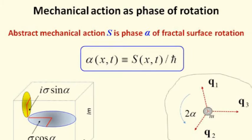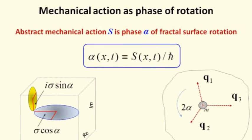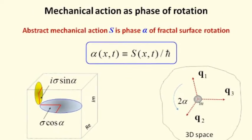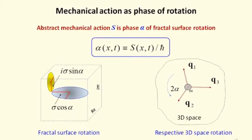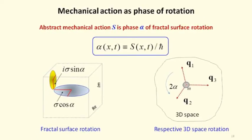First, the particle's invisible rotation reveals the mystery of mechanical action. This abstract function turns out to be nothing else but a half of the particle's phase rotation or full phase of the two-dimensional fractal space rotation.